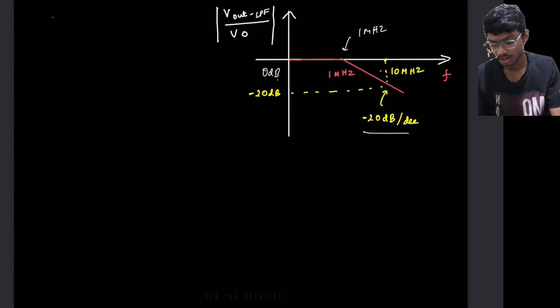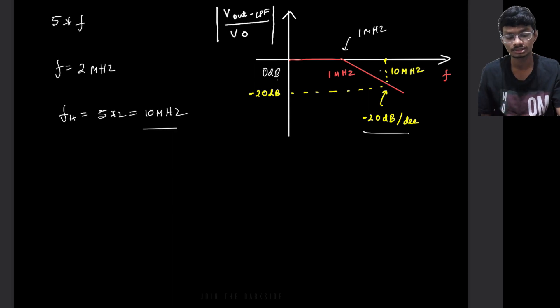So in our case the harmonic frequency is 5 times f and f is 2 MHz. So fH is equals to 5 times 2 which is 10 MHz. As the harmonic frequency is 10 MHz the gain at the harmonic frequency is minus 20 dB.